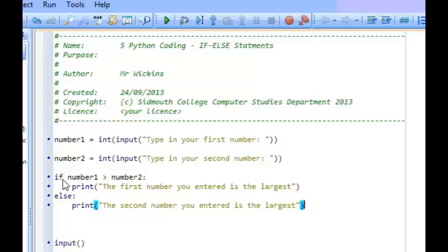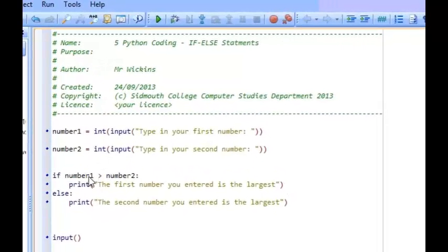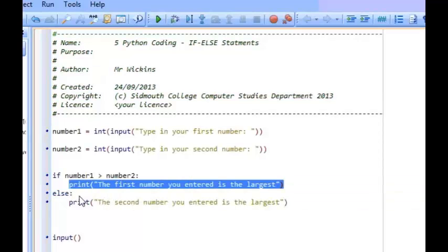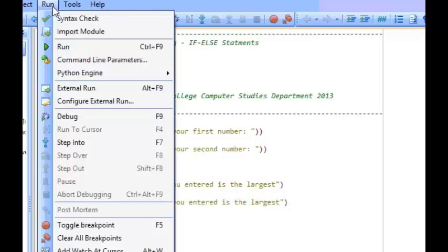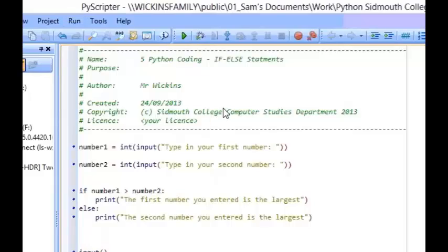So we've entered two numbers and we've said that if number1 is greater than number2, display that onto the screen. Else, which means if number1 isn't greater than number2, print that statement onto the screen. So if I now run this program, let's see what happens.